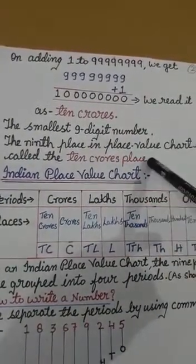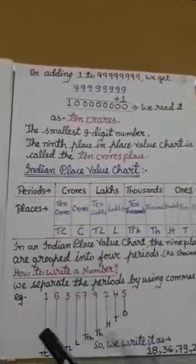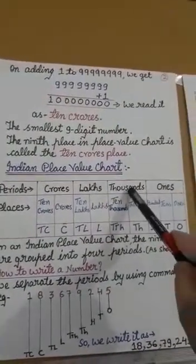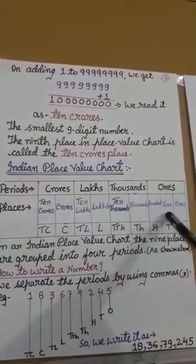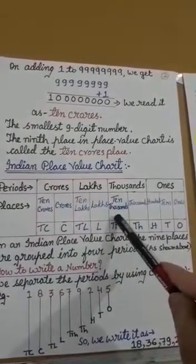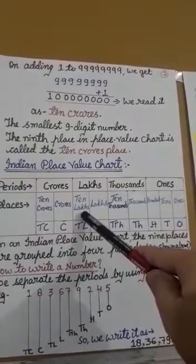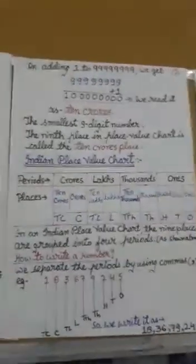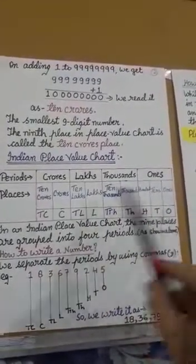In the Indian place value chart, the nine places are grouped into four periods: ones, thousands, lakhs, and crores. In ones we have ones, tens, hundreds. In thousands we have thousands and ten thousands. In lakhs we have lakhs and ten lakhs. In crores we have crores and ten crores. Always remember: we separate periods with a comma.